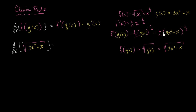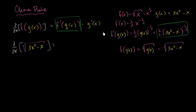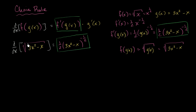f prime of g of x equals exactly this — the derivative of f, the outer function, with respect to the inner function. It equals 1/2 times g of x to the negative 1/2, times 3x squared minus x. Conceptually, you're taking something to the 1/2 power, so the derivative of that whole thing with respect to your something is 1/2 times that something to the negative 1/2 power. But now we have to take the derivative of our something with respect to x.